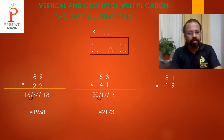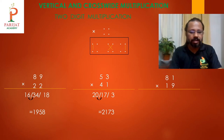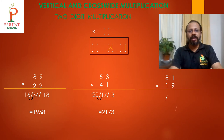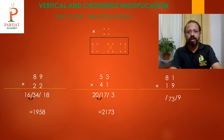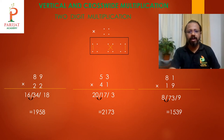We write 8 as it is, 1 carries over into 4, and 3 carries over into 6. The answer is 1958. Next, 81 times 73: 8 times 1 is 8, we add 7 to get 15, and the answer is 1539.